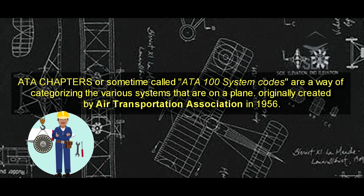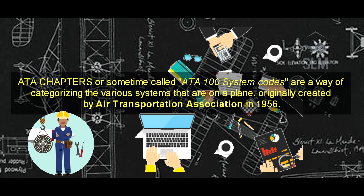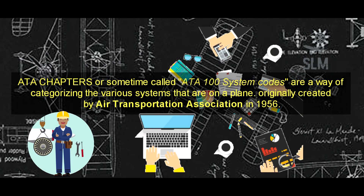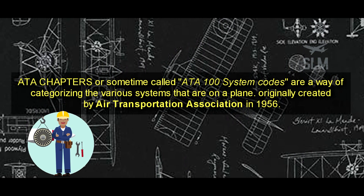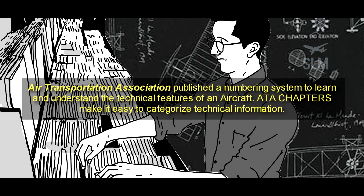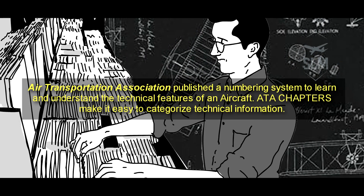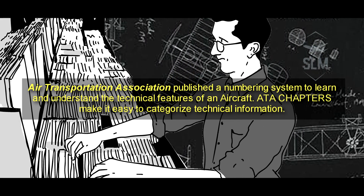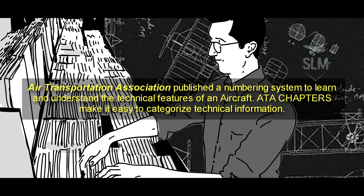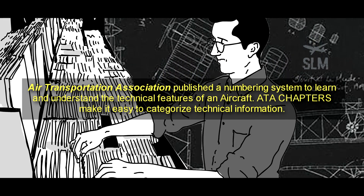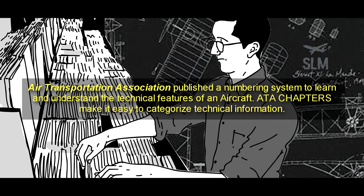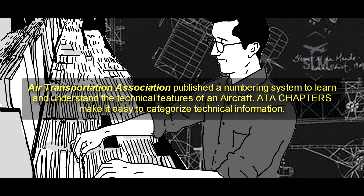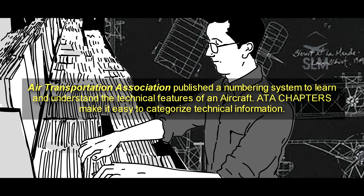Originally created by the Air Transportation Association in 1956, the Air Transportation Association published a numbering system to learn and understand the technical features of an aircraft. ATA chapters make it easy to categorize technical information.